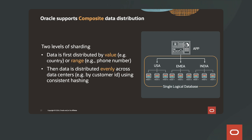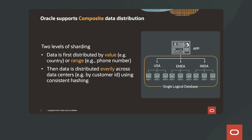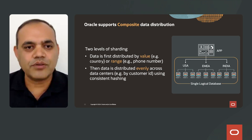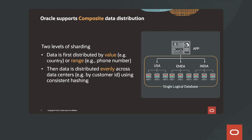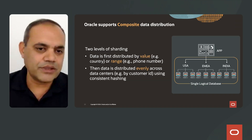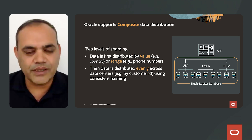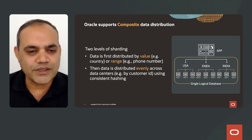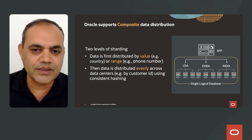Oracle also supports composite data distribution — two levels of sharding with two different sharding keys and two different sharding methods. Data is first distributed by value, such as a country code, or by range, such as a phone number. Then data is distributed evenly across data centers using a customer ID as a second sharding key and consistent hashing as the second sharding method.